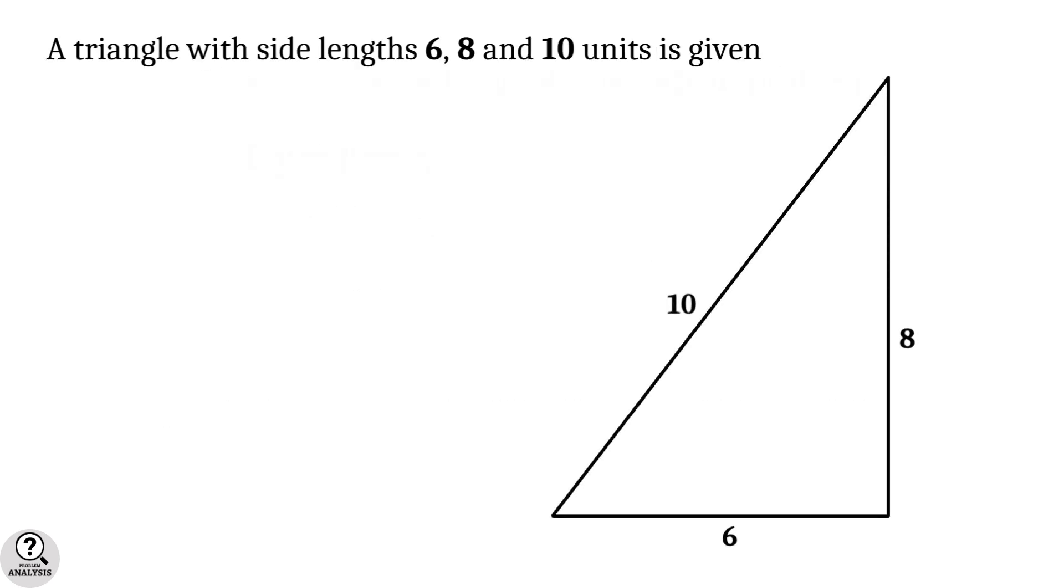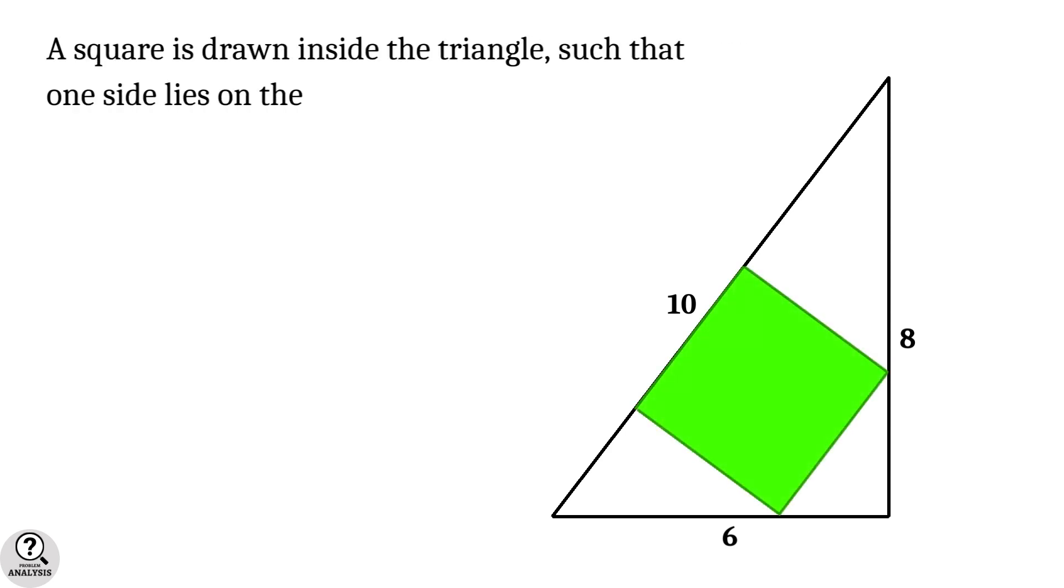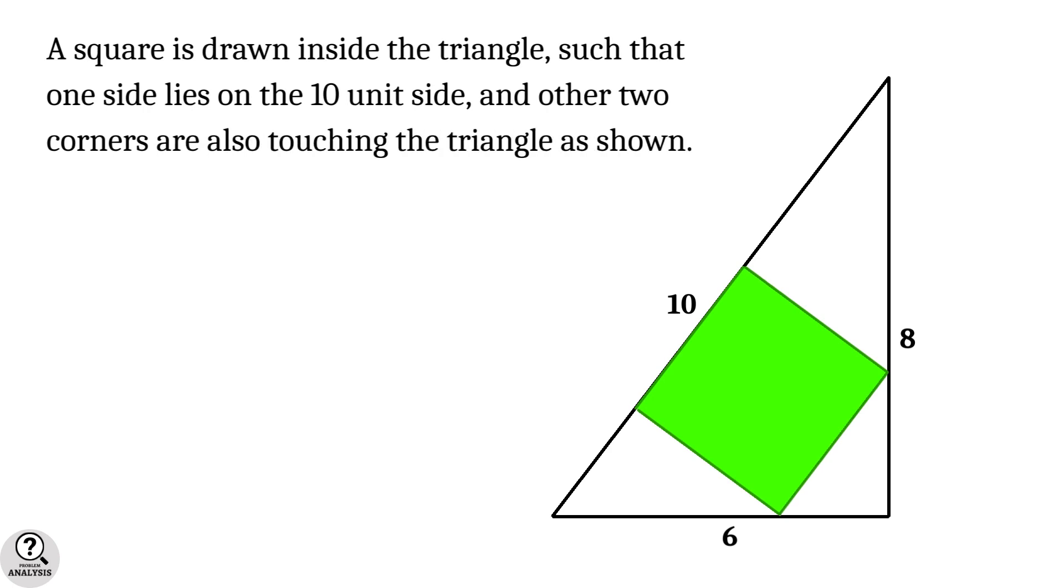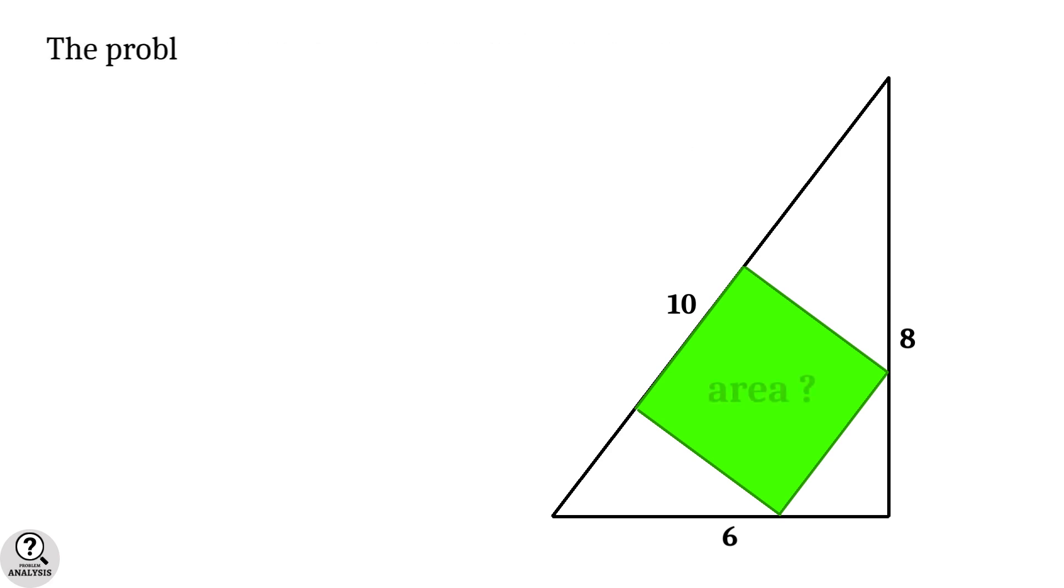We have a triangle with side lengths 6, 8, and 10 units. Inside this triangle, I am drawing a square in such a way that one side of the square lies on the 10 unit side and the remaining two vertices of the square are touching the triangle. Now my problem is: what is the area of the square?